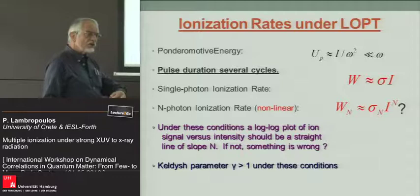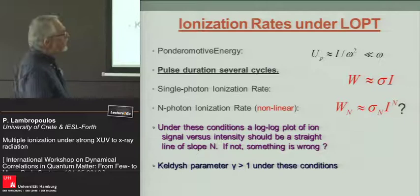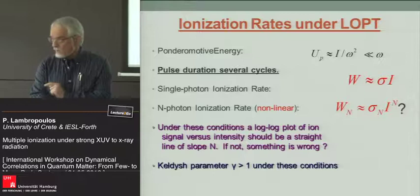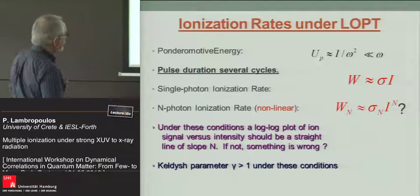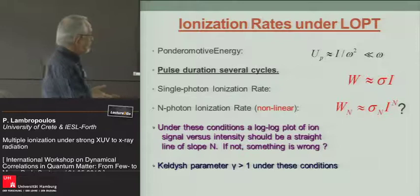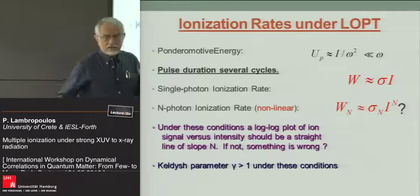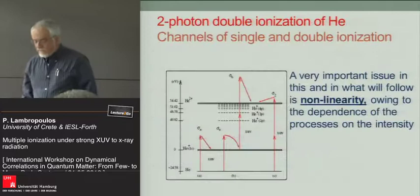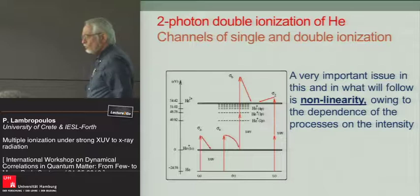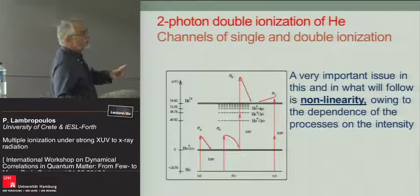Under these conditions, if you have a process where you observe, say, 10-photon ionization of some species and you plot the log of the yield versus the log of the intensity, you should see a slope of power N. If that slope is not N, something else is happening. Those who prefer the Keldysh parameter: when the Keldysh parameter is larger than one, we are in this multi-photon regime I'm talking about. The Keldysh parameter in infrared strong-field physics is smaller than one.